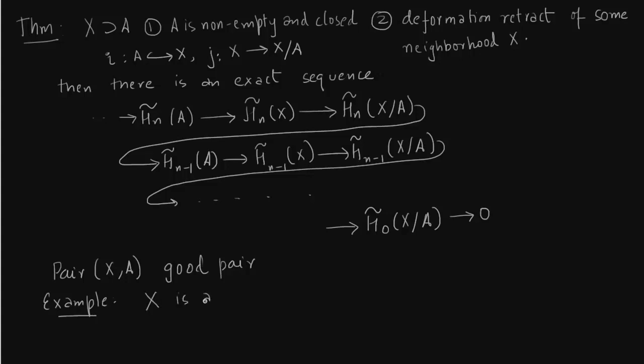Example: suppose X is a CW complex and A is a sub-complex, then A is a CW complex in its own right. Then it satisfies the conditions above, and it satisfies the theorem above. So we say X, A is a good pair.